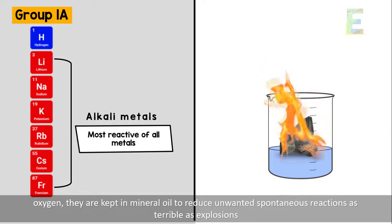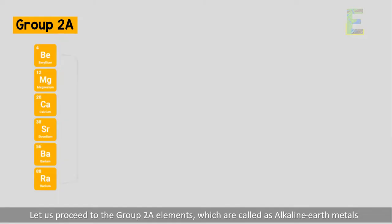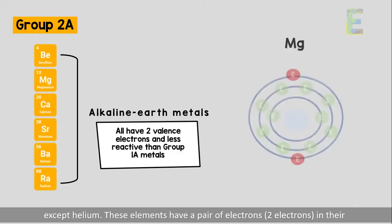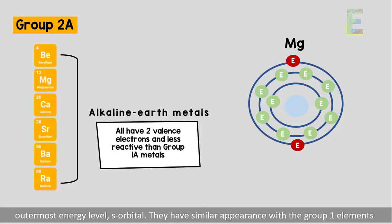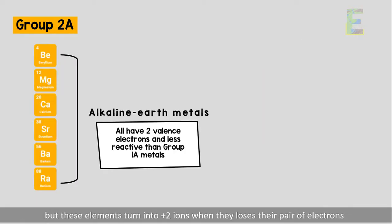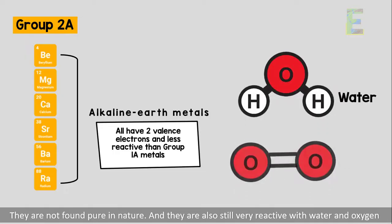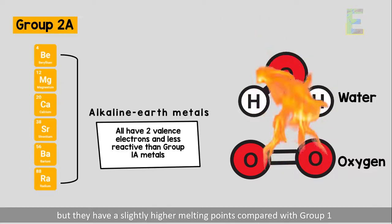Let us now proceed to the Group 2A elements, which are called alkaline earth metals, except helium. These elements have a pair of electrons, or two electrons, in their outermost energy level S orbital. They have a similar appearance to Group 1 elements, but they turn into positive 2 ions when they lose their pair of electrons. They are not found pure in nature and are also very reactive with water and oxygen, but they have slightly higher melting points compared to Group 1.